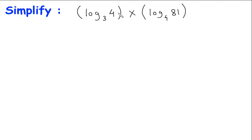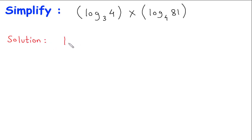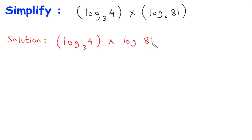Simplify log of 4 to the base 3 into log of 81 to the base 4. Solution: log of 4 to the base 3 into log of 81 to the base 4.